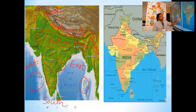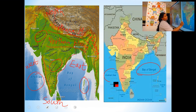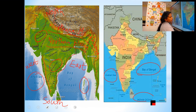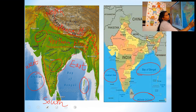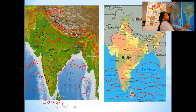Look here. You can see the Bay of Bengal here, then the Arabian Sea, and here the Indian Ocean. So on each side we have water — the Bay of Bengal, the Arabian Sea, and the Indian Ocean.